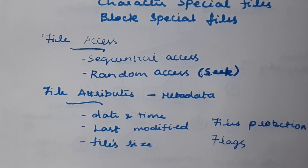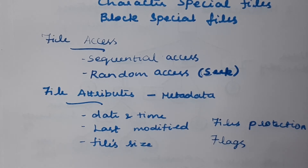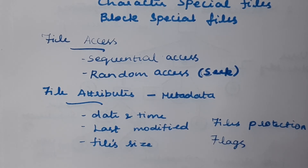In some systems, file attributes are referred to as metadata, which is very similar in concept. When we are accessing files in random order or when the file structure is represented as a tree, all records are accessed with the help of a key value. The key position, key length field, and record length field all come under file attributes.